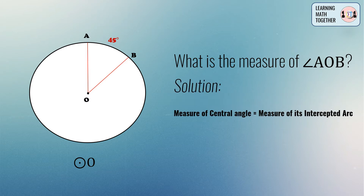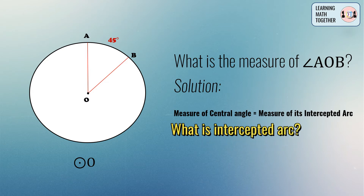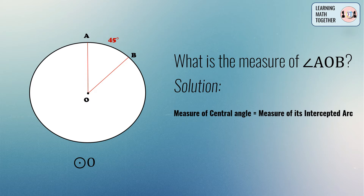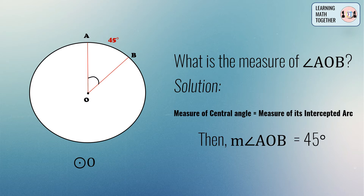The measurement of the central angle is equal to the measurement of its intercepted arc. An intercepted arc is part of the circumference of a circle — it is usually the opening of the central angle. So whatever is the measurement of the intercepted arc, that is also the measurement of the central angle. Therefore, the measurement of angle AOB is equal to 45 degrees.